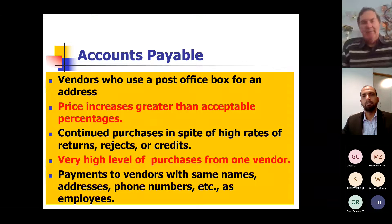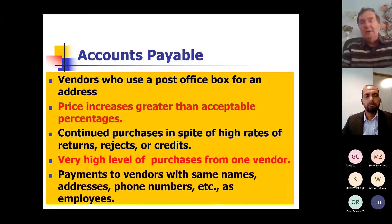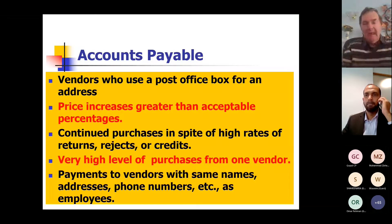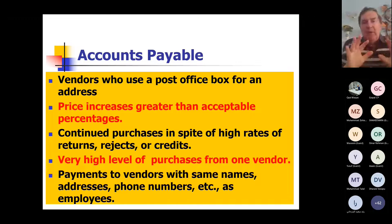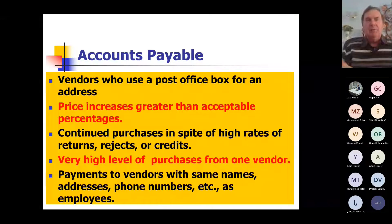Here are more accounts payable examples: vendors using a post office box number for an address — not invalid but worth checking. Price increases greater than acceptable percentages — why is this item going up 100% when we expect 10-15%? Continued purchases despite high rates of rejections or credits — why continue buying from a supplier we're unhappy with? Very high levels of purchases from one vendor suddenly. Payments to vendors with the same names, addresses, or phone numbers as employees.